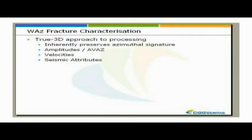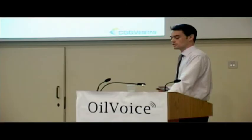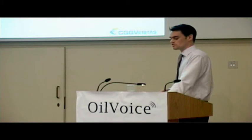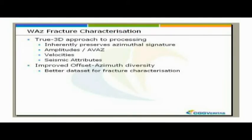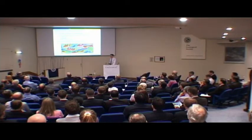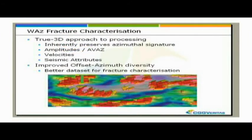Fracture characterization is the final topic. Our wide azimuth approach to processing and these 3D algorithms inherently preserve the azimuthal signature — the very thing we want for fracture characterization. This includes amplitude versus azimuth, velocities, seismic attributes, and all the things we want to use. The improved offset-azimuth diversity gives us a better data set for fracture characterization, allowing us to derive fracture intensity and azimuth in the seismic volume.